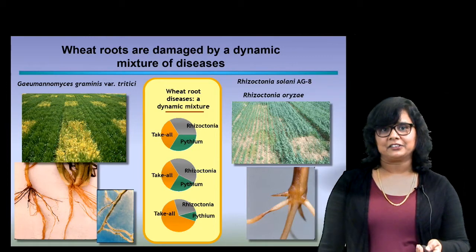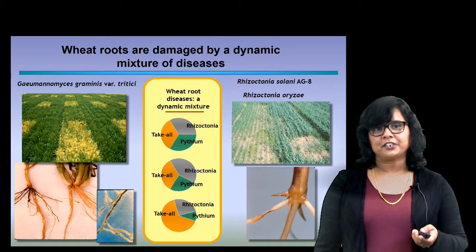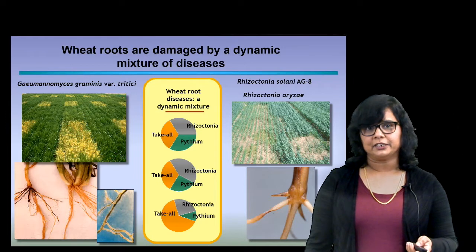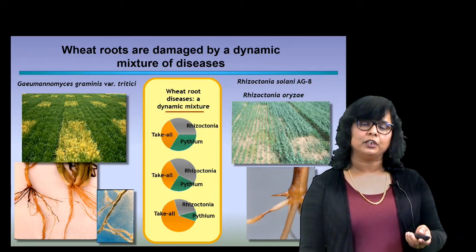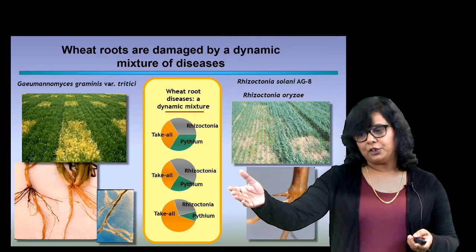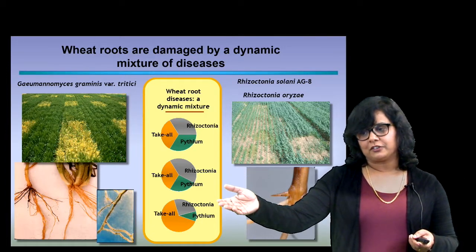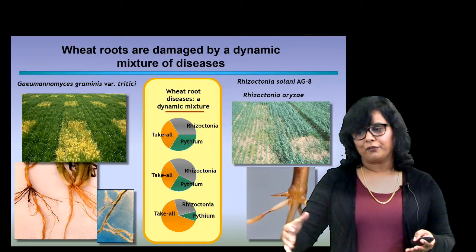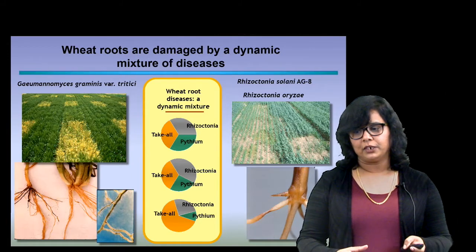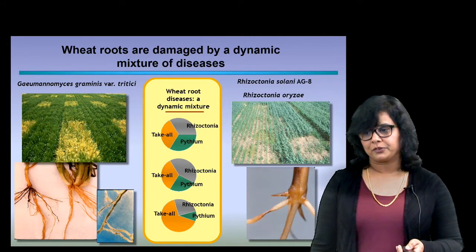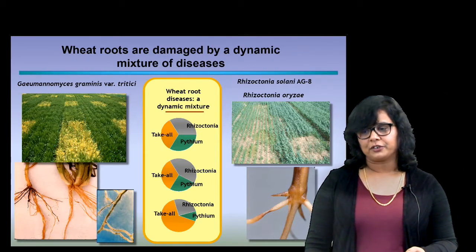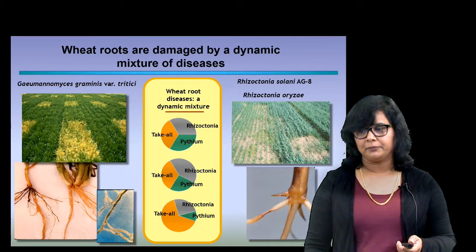Every crop has its Achilles heel. Some crops are affected at the leaves more, but in the case of wheat, the Achilles heel — the part that is most vulnerable — is the root. As you can see on this slide, you will have three different diseases that sort of form a complex that affect the root of wheat crops. We're going to talk about two of them, and then our focus of research is, of course, take-all.